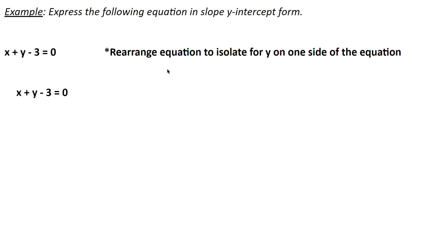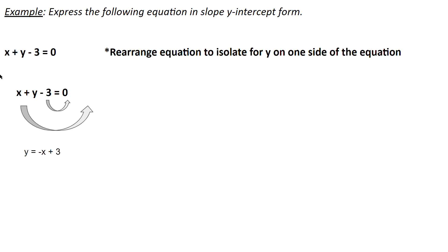We rearrange the equation to isolate y on one side. Starting with x plus y minus 3 equals 0 in standard form, we bring everything that's not y to the other side. The x and negative 3 go to the other side, giving us y equals negative x plus 3, which has a slope of negative 1 and a y-intercept of 3.